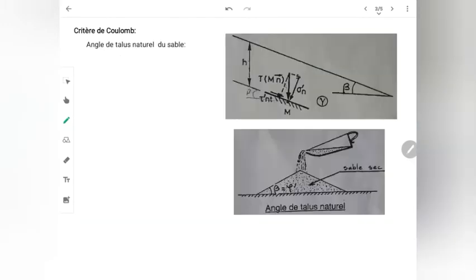Nous allons examiner maintenant le cas spécial d'un sol grenu du type sable, et voir l'angle de talus naturel d'un sable. Imaginez un camion qui vient verser du sable : il y a un talus naturel qui va se manifester. Après un certain temps, il y aurait stabilisation de ce sable selon un talus — c'est ce qu'on appelle le talus naturel du sable.